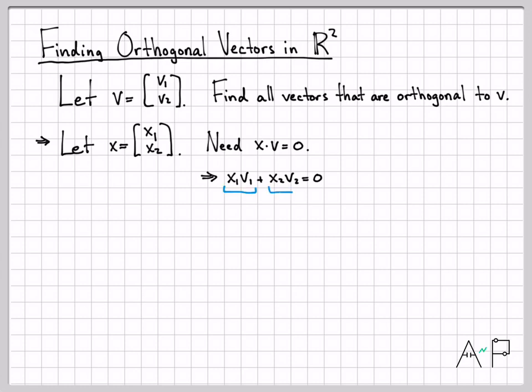equals zero, which means I need these two things to cancel out. Whatever x₁v₁ is, I need x₂v₂ to be the negative of that value. If that's the case, then these will indeed add up to zero and I'll have a vector x that is orthogonal to v. So these products need to have the same magnitude but be opposite in sign. Let's go ahead and try something.